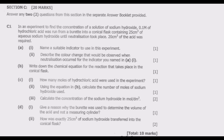In question C1, an experiment is described to find the concentration of a solution of sodium hydroxide. A 0.1 mol per decimeter cubic solution of hydrochloric acid was titrated from a burette into a conical flask containing 25 cm³ of aqueous sodium hydroxide until neutralization took place. 20 cm³ of the acid was required. Part a, number one: name a suitable indicator to use in this experiment. Number two: describe the color change observed when neutralization occurred.